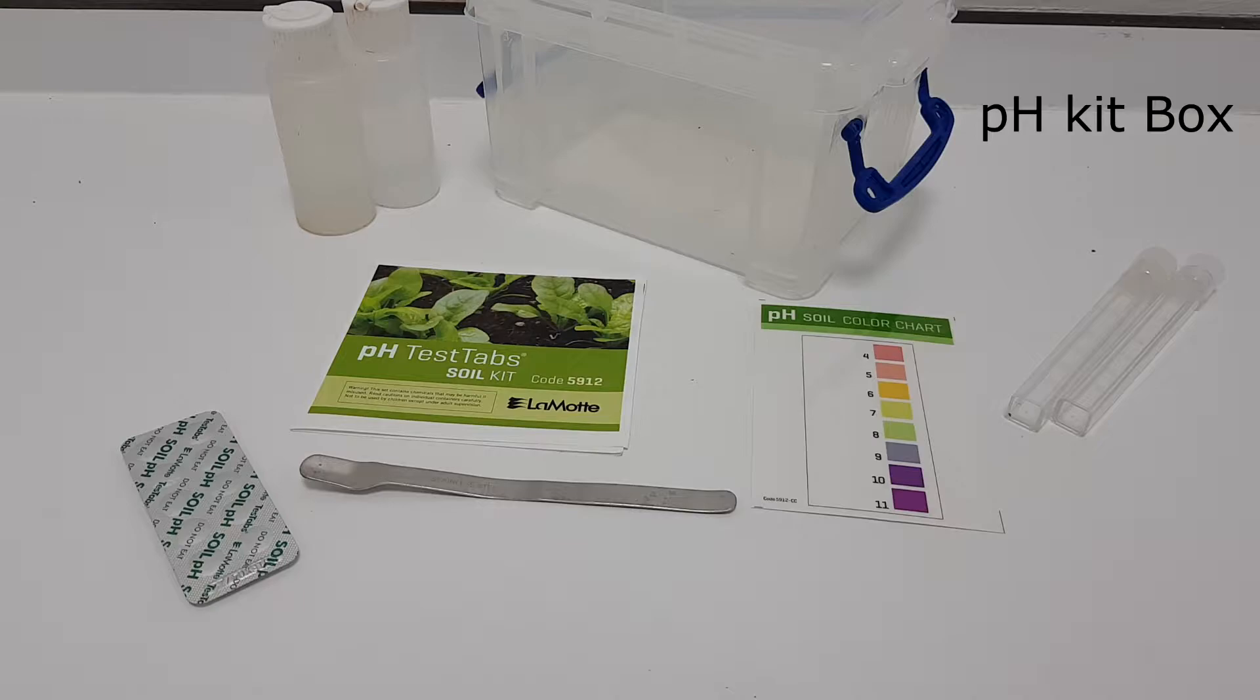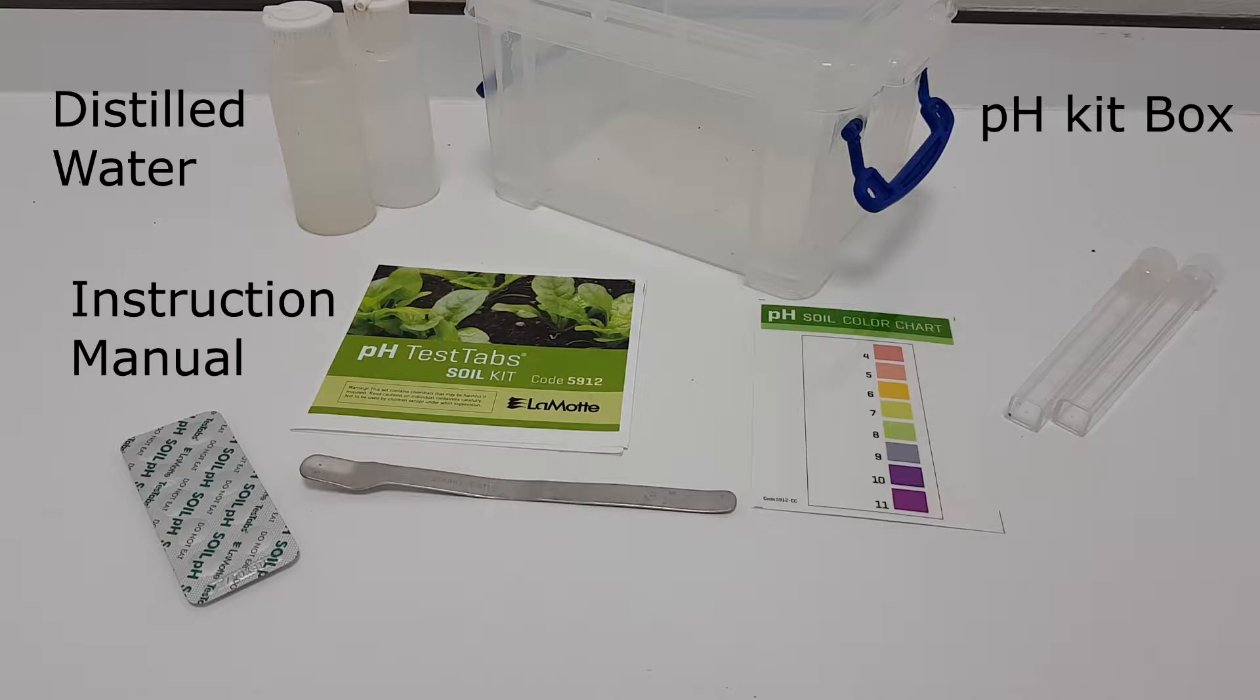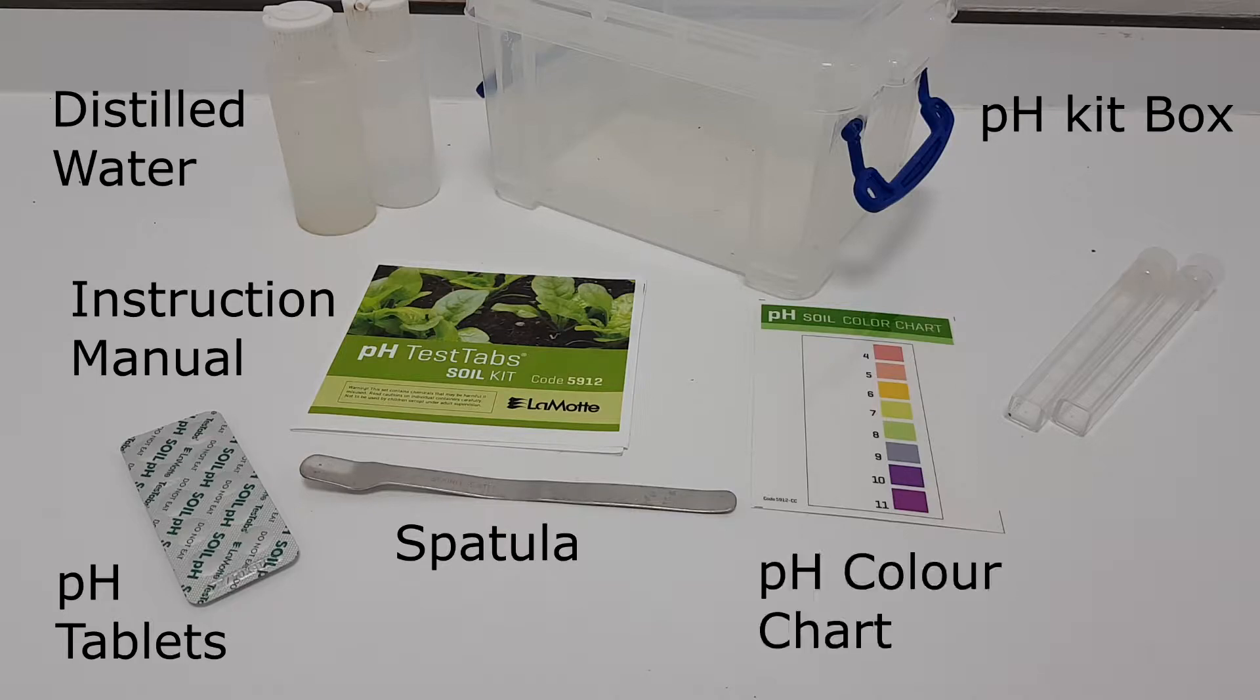Inside your kit box, you'll find some distilled water, the instruction manual, the pH test tablets, a spatula, the pH color chart, and some test tubes with caps.